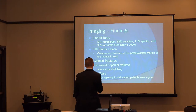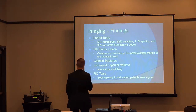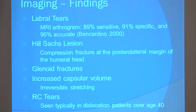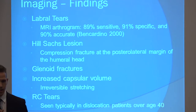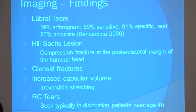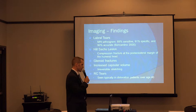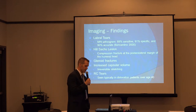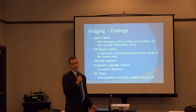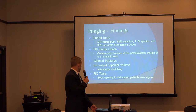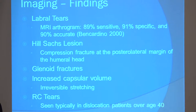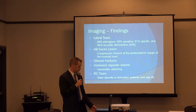The findings we want to look for on imaging are going to be labral tears, Hill-Sachs lesions — which are compression fractures of the humeral head on the glenoid whenever it's dislocated — glenoid fractures, increased capsule volume from stretching of the capsule whenever it's dislocated, and rotator cuff tears. Typically those are the patients above the age of 40 that we see with rotator cuff tears. Younger patients, when they dislocate their shoulder, will fail through the labrum and the ligaments. Older patients will fail through the rotator cuff.